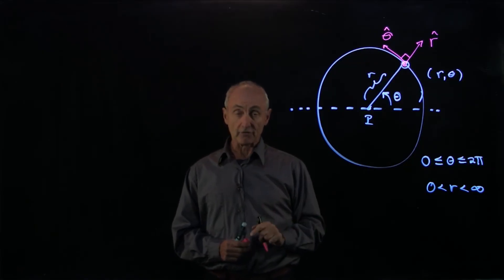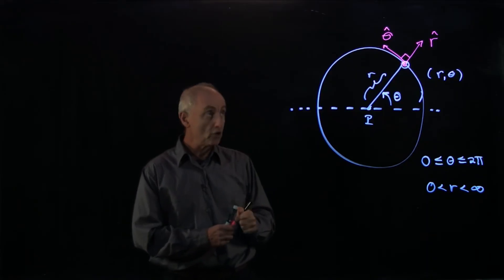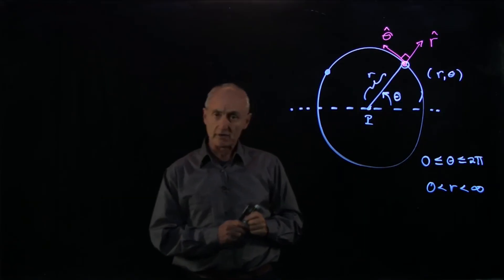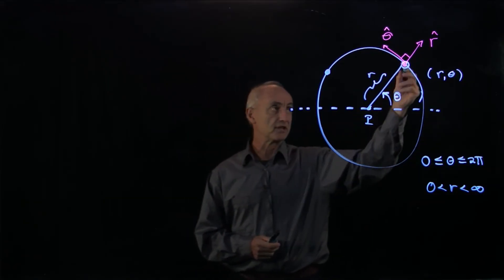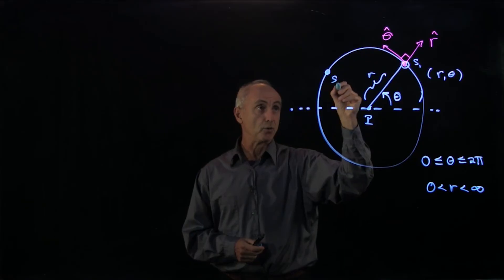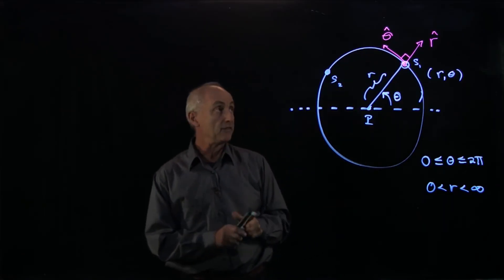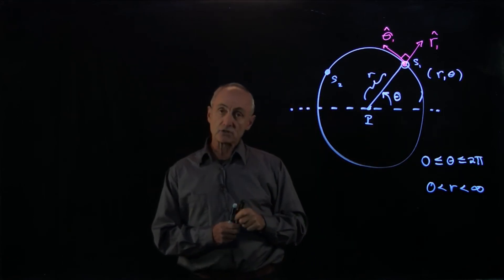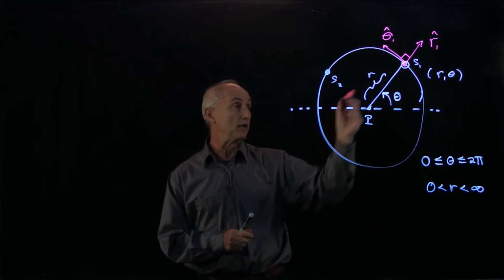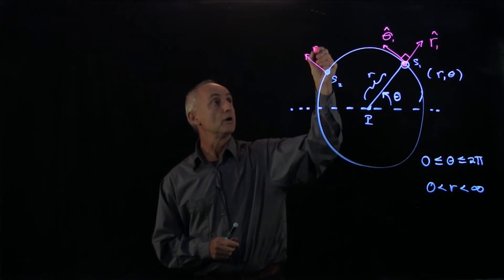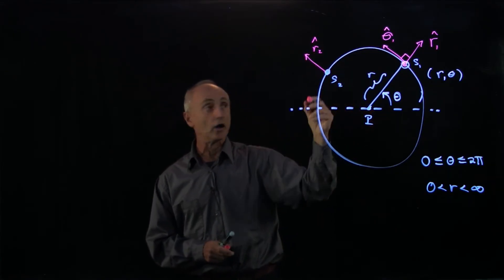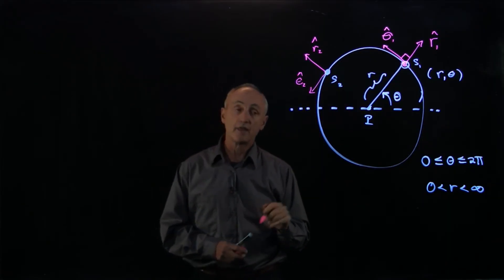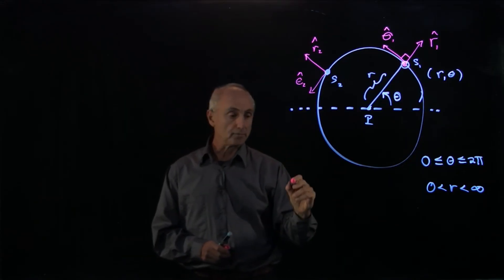One has to be very careful in polar coordinates for the following reason. Suppose you're at another point over here. Because we have two different points, let's give them names: s1 and s2. The unit vectors at s1 are r hat 1 and theta hat 1. When we're at point s2, we choose unit vectors exactly the same way. r hat 2 points in the direction of increasing r, and theta hat 2 points in the direction of increasing theta.